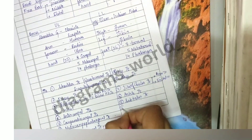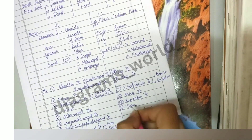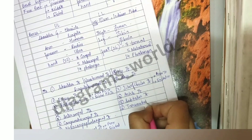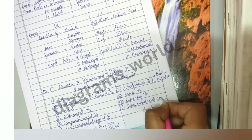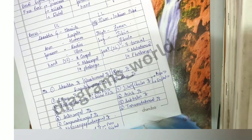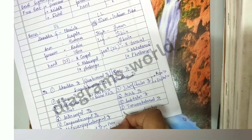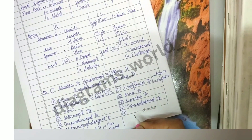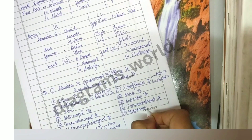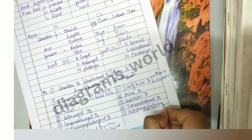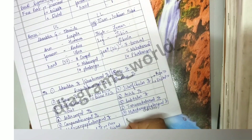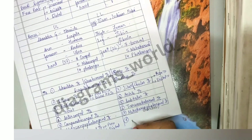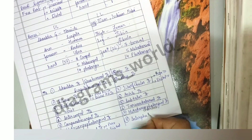Then we have the tarsometatarsal joint, formed when the tarsal bones meet the metatarsals of the foot. Then we have the metatarsophalangeal joint, and again in the foot we have interphalangeal joints.